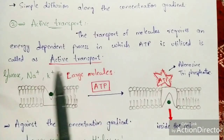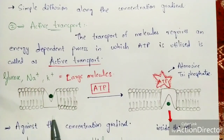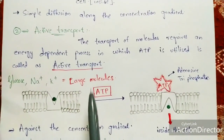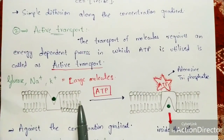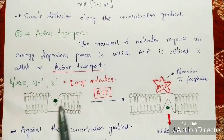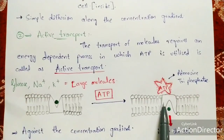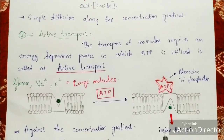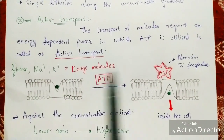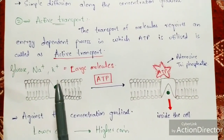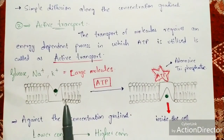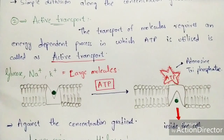Large molecules cannot transport from the outer environment to the inner environment on their own. ATP molecules combine with a particular carrier protein, and the ATP molecule helps in transporting large molecules into the cell. When the large molecule tries to enter, the protein blocks it. Once the ATP molecule joins the carrier protein, the shape of the protein changes, allowing the molecule to pass through — moving against the concentration gradient, from lower concentration to higher concentration.